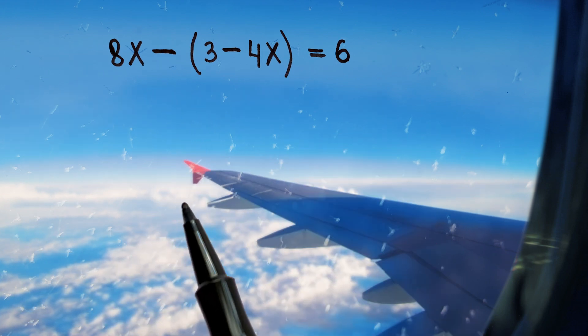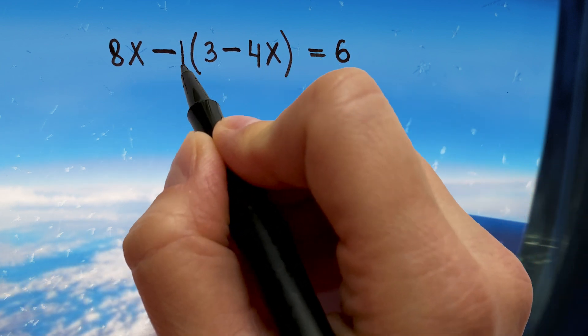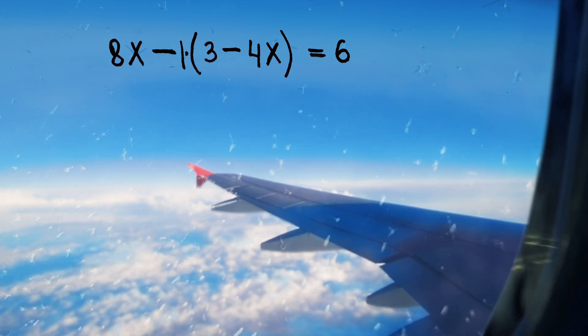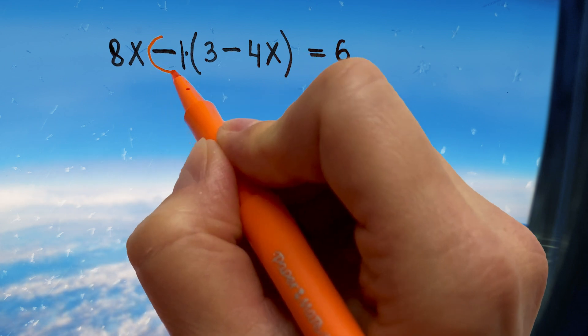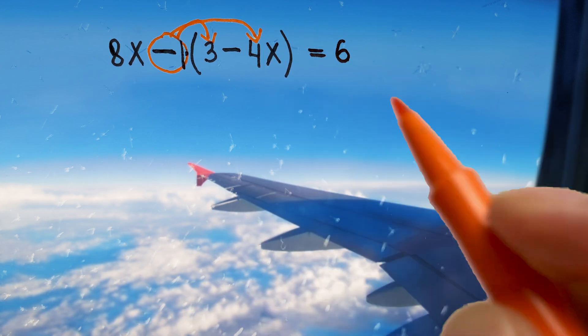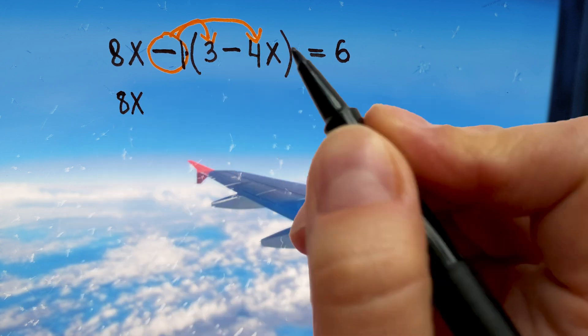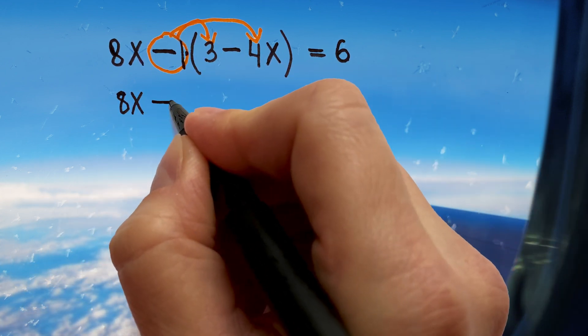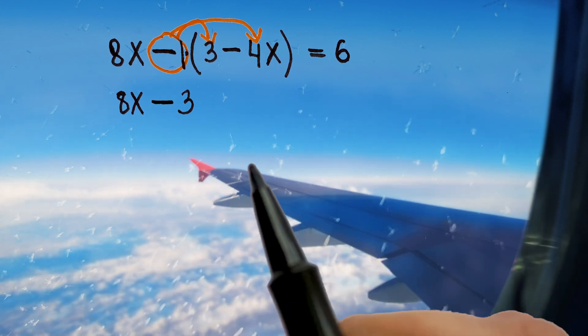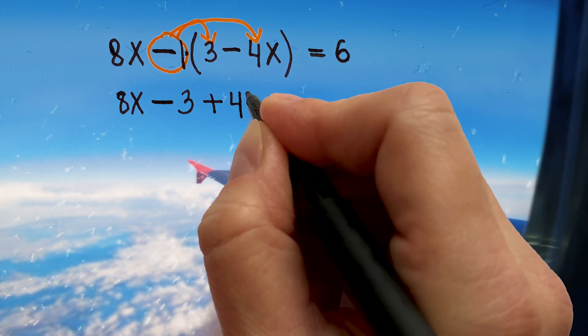Now you have negative 1 times everything inside the parentheses so you can use the distributive property. You will take negative 1 and multiply it by 3 and by negative 4x. Let's do it. Bring down 8x and now negative 1 times 3 will be negative 3. Write your negative signs long enough so they stand out. Negative 1 times negative 4x will be positive 4x.